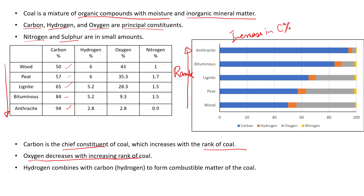Oxygen decreases with increasing rank of coal. The gray color in the diagram represents oxygen — there is a complete decline in oxygen content. Hydrogen combines with carbon to give hydrocarbon, which forms the combustible matter of the coal. Compounds like methane, ethane, butane and several complex long-chain compounds are called hydrocarbons. Even hydrogen also decreases in content as the rank of coal increases.